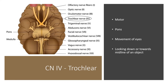Cranial nerve 4 is the trochlear nerve. It's a motor nerve only, located in the pons. It's involved in movement of the eyes, specifically looking down and towards the midline of an object.